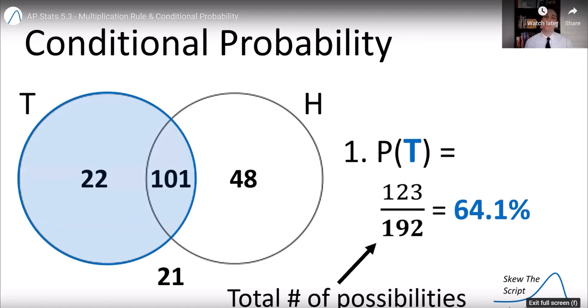Now, we always divide, when we're getting these general probabilities, usually by the total number of possibilities. And in this case, total number of possibilities is 192. We're selecting from all the men in the data set, that's the total number of possibilities.